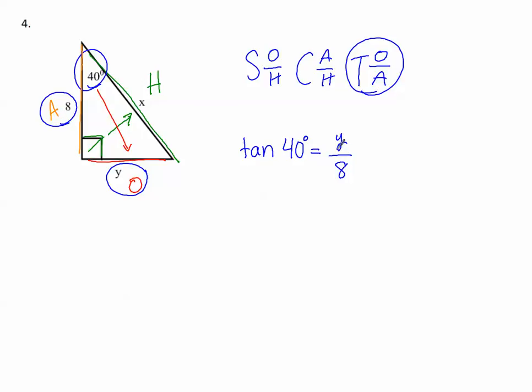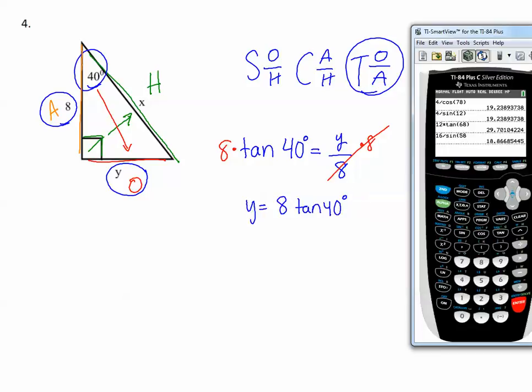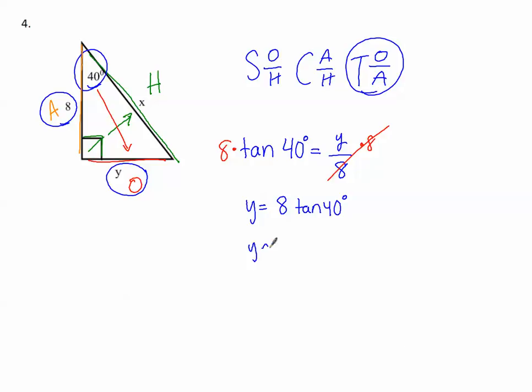Now, remember when y is on top, we multiply times 8 times 8. So I can write y equals 8 times the tangent of 40 degrees. Go to my calculator. 8 tangent 40. 6.7. Y is approximately 6.7.